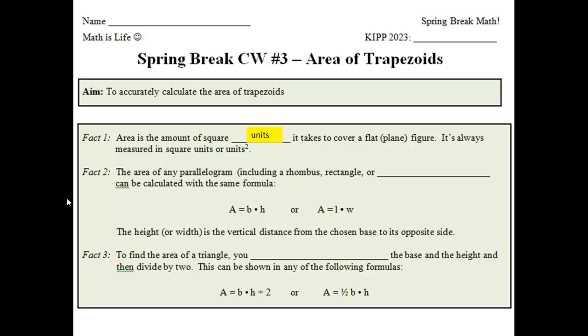Fact number 2. This was going back to our very first classwork. It says the area of any parallelogram, including a rhombus, rectangle, or blank, can be calculated with the same formula. Area equals base times height, or area equals length times width. A reminder, the height or width is the vertical distance, straight up and down from the chosen base to its opposite side. What word should go in that blank? Yeah, it should be square. My apologies. There should be a parenthesis there to close that up. But any parallelogram, and parallelograms include rhombuses or rhombi, rectangles, or squares.